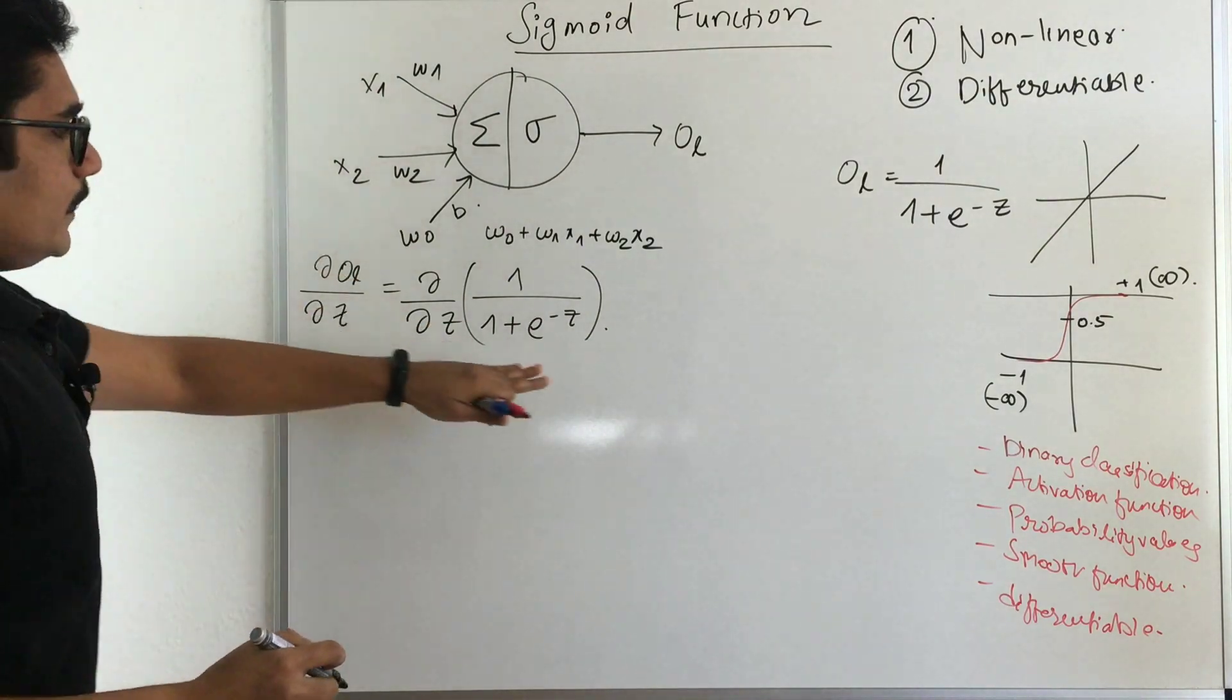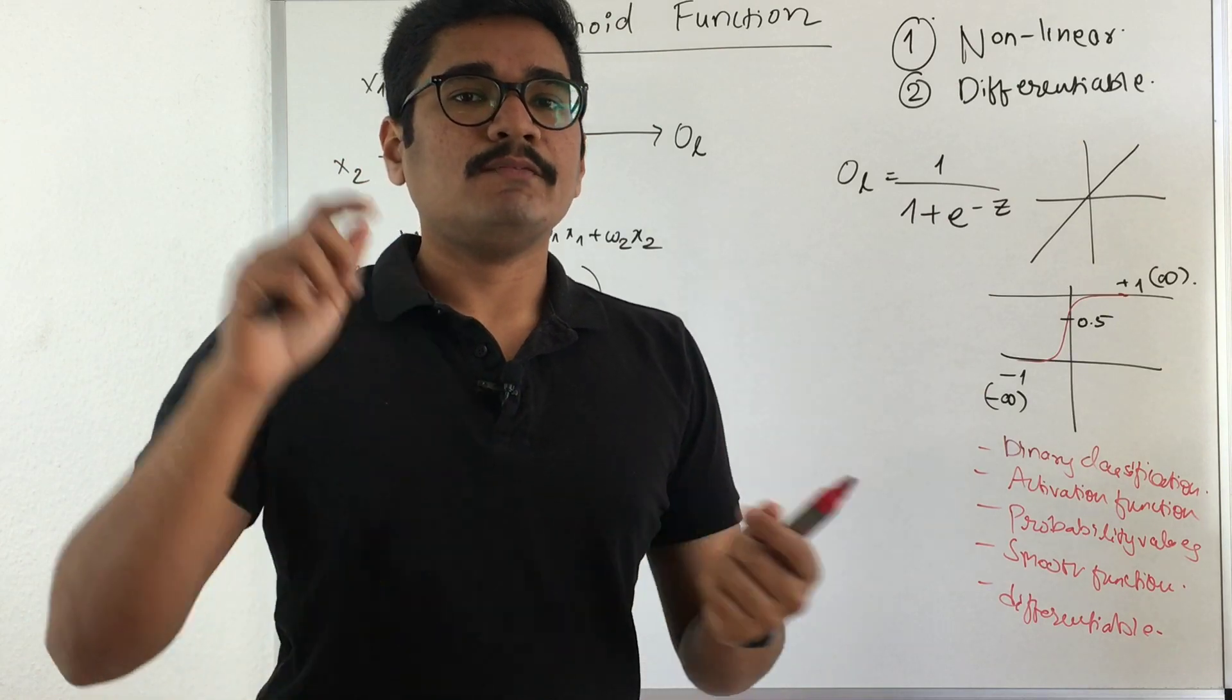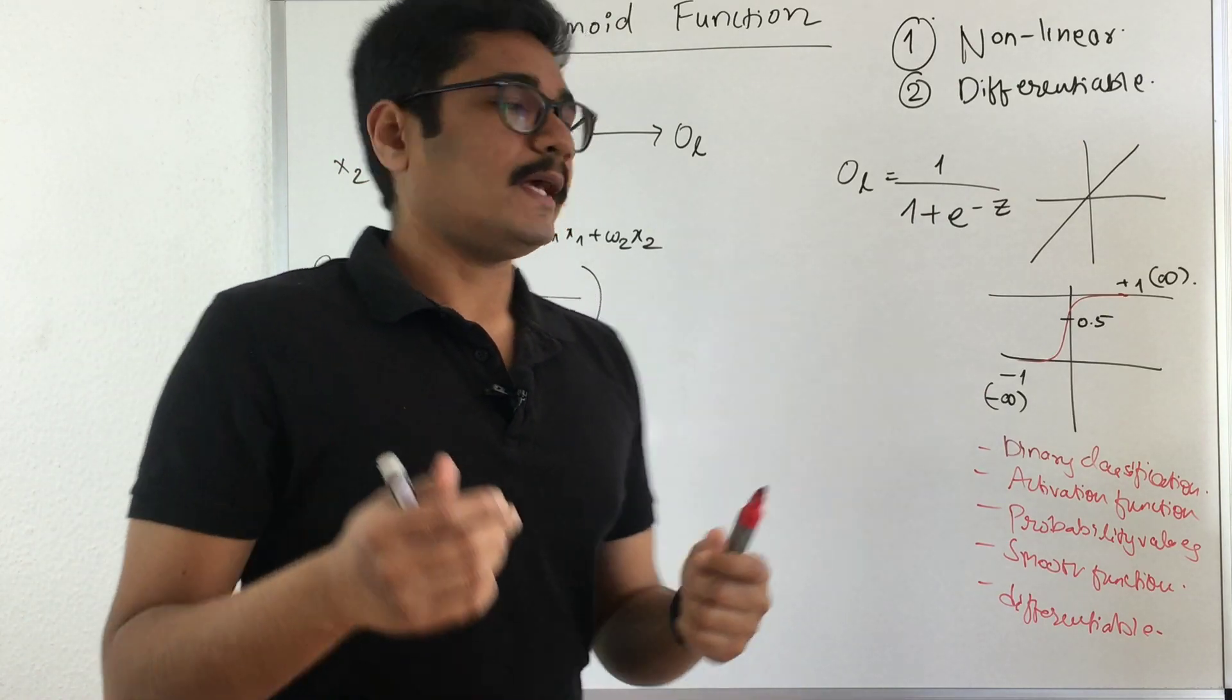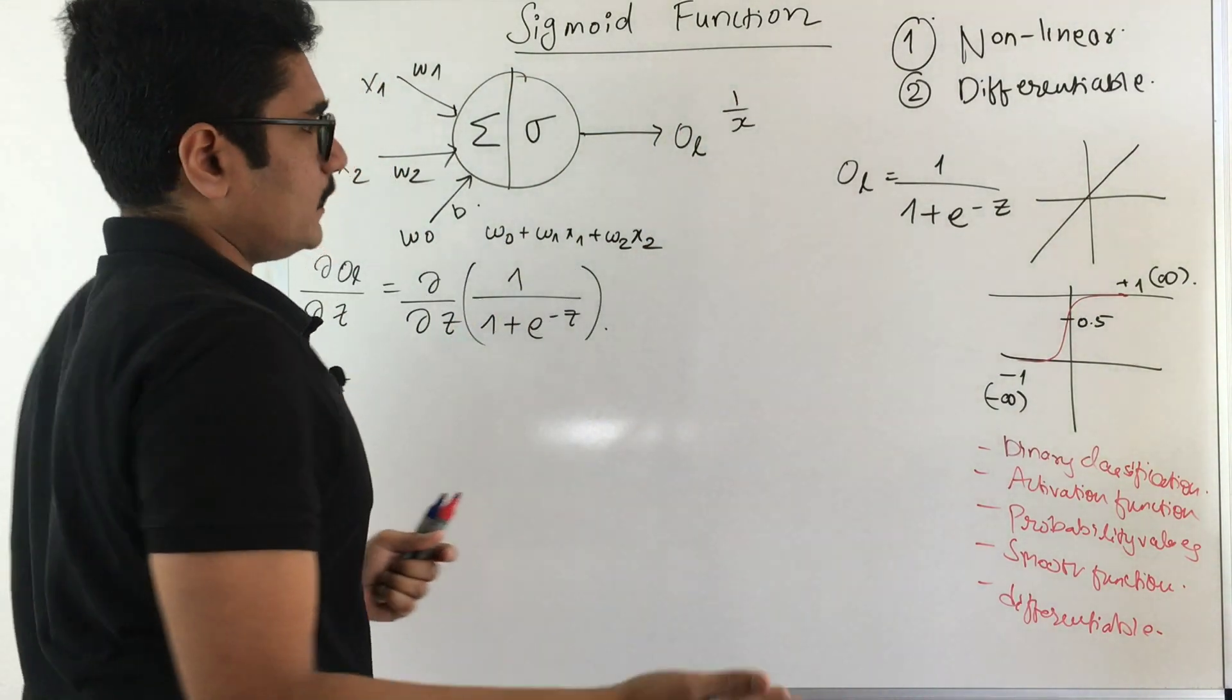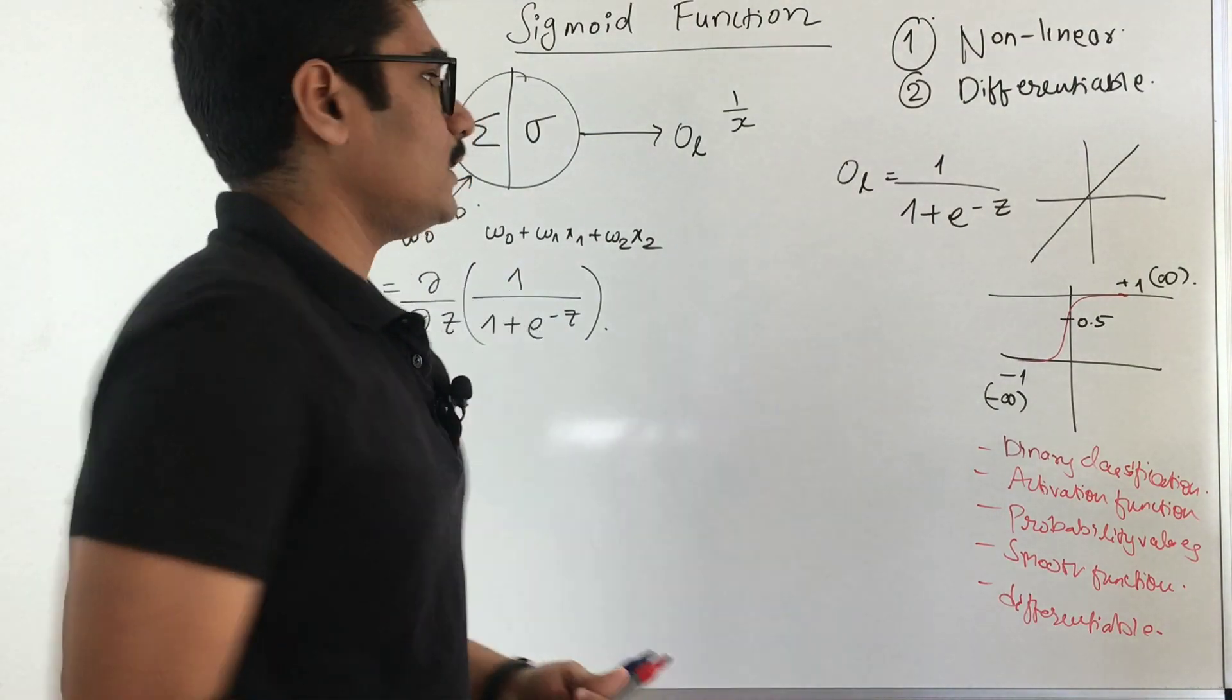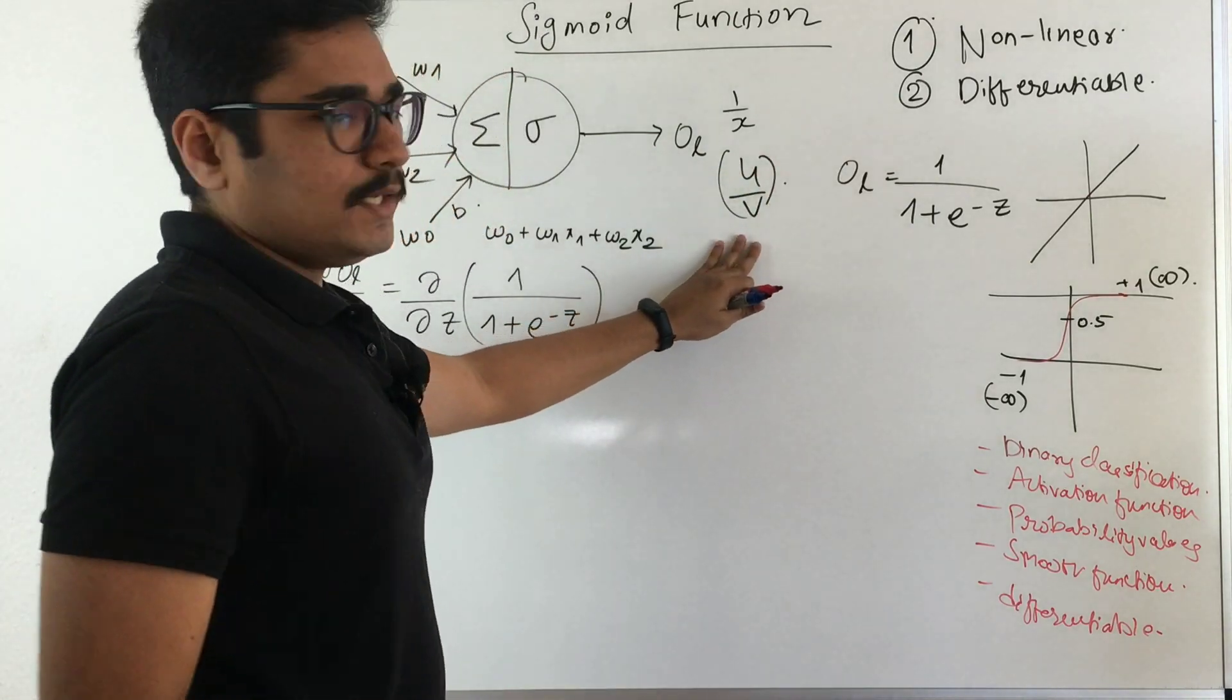We can do the derivative in either of two ways. The first way I discussed in the previous video—I'll put the link in the description. There you consider this as 1/x and take the derivative as -1/x^2. Here we'll use a separate technique: the u/v rule.